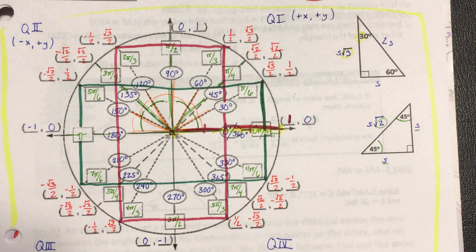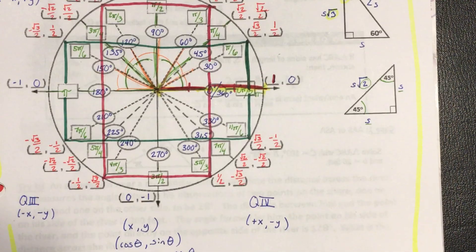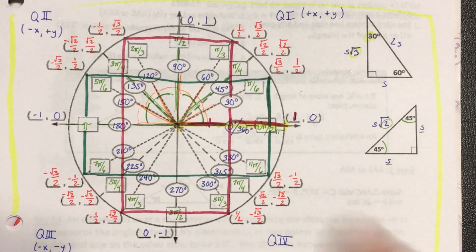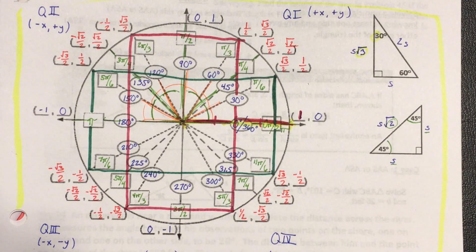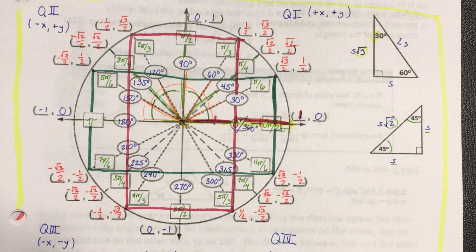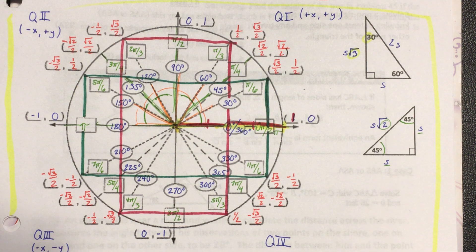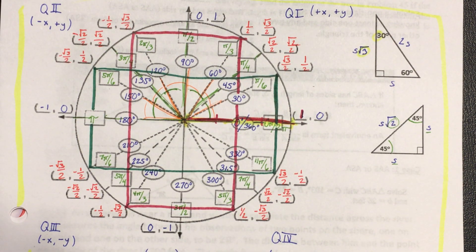We're going to stop here before moving on to the eight problems below. I really recommend practicing drawing the unit circle maybe two times to make sure you've got it down. There is a blank one in your homework packet that you will need to fill out, so print one off from the link first for practice, then do the one in your homework packet. After that, we'll move on to the eight problems at the bottom of page 5.